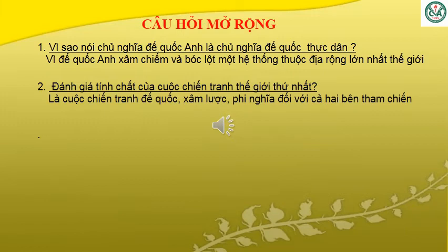Phần câu hỏi mở rộng gồm có bốn câu. Câu số một: vì sao nói chủ nghĩa đế quốc Anh là chủ nghĩa đế quốc thực dân? Trả lời: vì đế quốc Anh xâm chiếm và bóc lột một hệ thống thuộc địa rộng lớn nhất thế giới. Câu số hai: đánh giá tính chất của cuộc chiến tranh thế giới thứ nhất. Trả lời: là cuộc chiến tranh đế quốc xâm lược phi nghĩa đối với cả hai bên tham chiến.